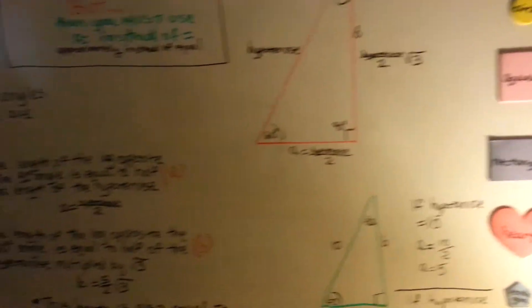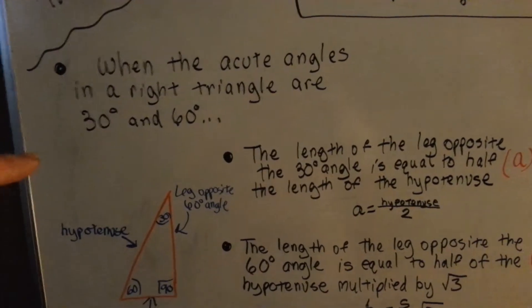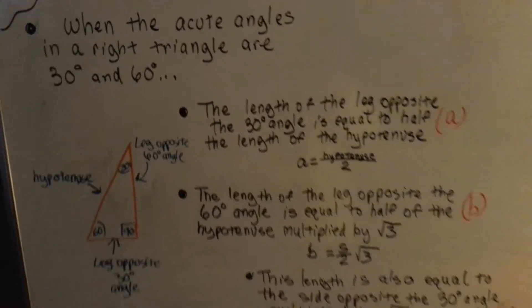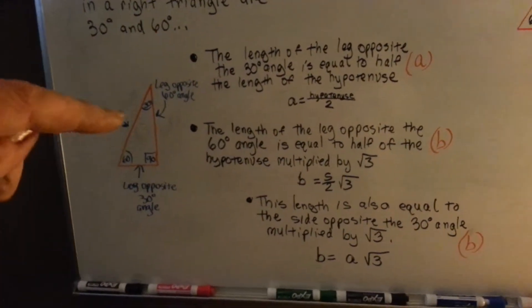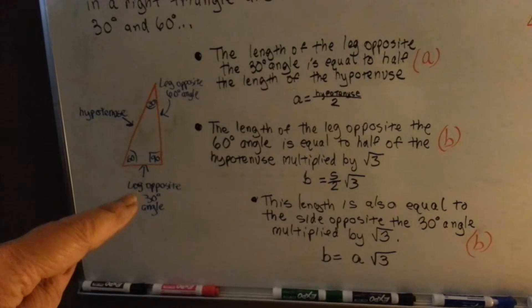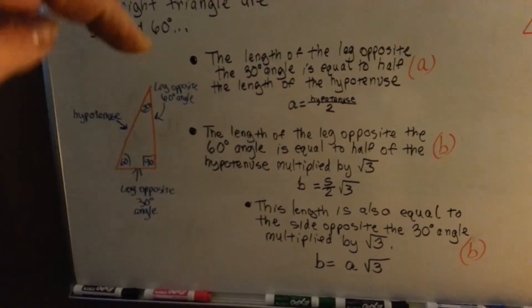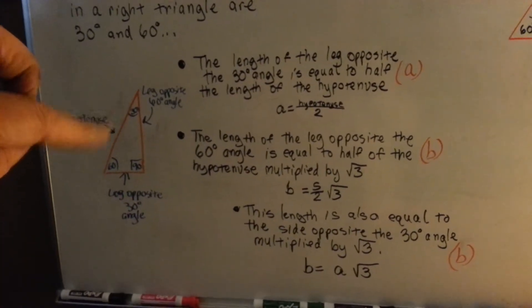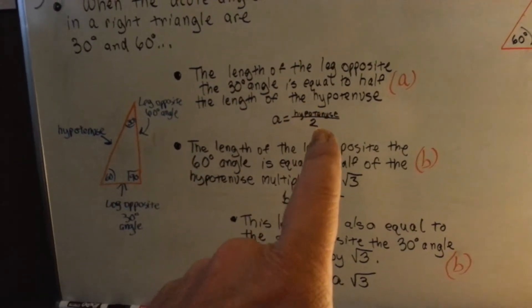Let's see what our rule is here. Remember, when the acute angles in a right triangle are 30 and 60 degrees, the length of the leg opposite the 30 degree angle - this is the leg opposite the 30 degree angle down here, because there's the 30 - this length opposite the 30 degree angle is equal to half of the hypotenuse. And you go A equals hypotenuse divided by 2.